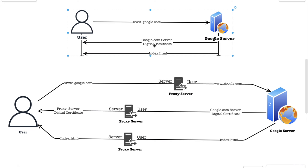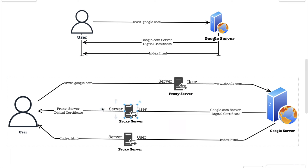On the other hand, if the user is using a proxy software like Burp Suite or Charles Proxy, the user will directly request to the proxy server. The proxy server then forwards that request to the actual Google server. In response, Google server sends its digital certificate to the proxy server, and the proxy server sends its own certificate to the user. In this scenario, the Google certificate is verified by the proxy server and the proxy server certificate is verified by the user.